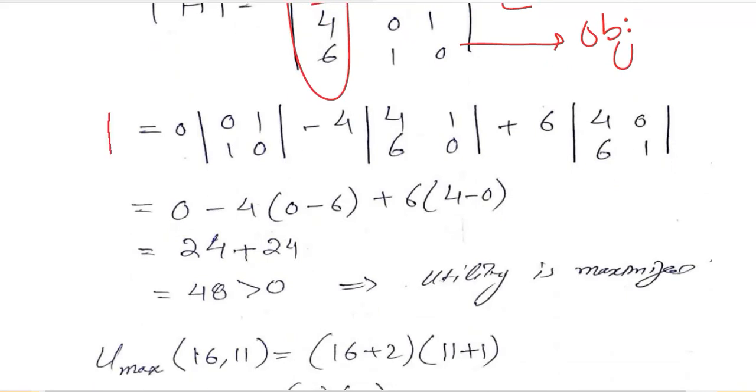Solving this 3 by 3 determinant is easy for you. This is a small DIY for you. After doing this, you can get the value of the bordered Hessian determinant. And that will be 48. And this is definitely greater than 0, a positive value.